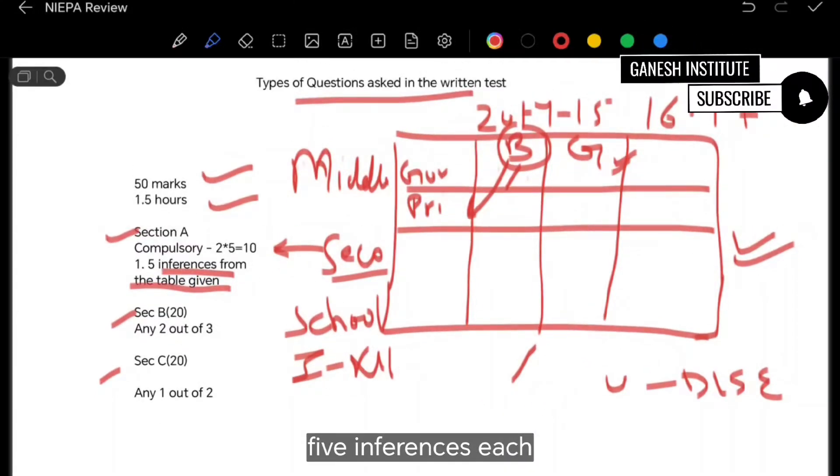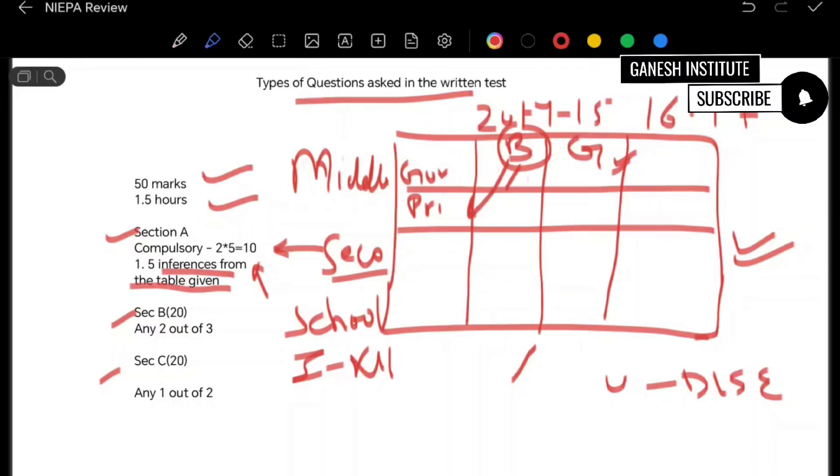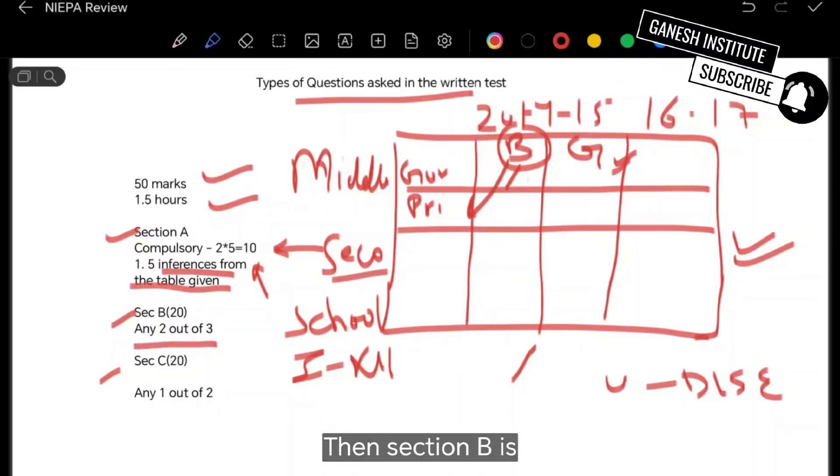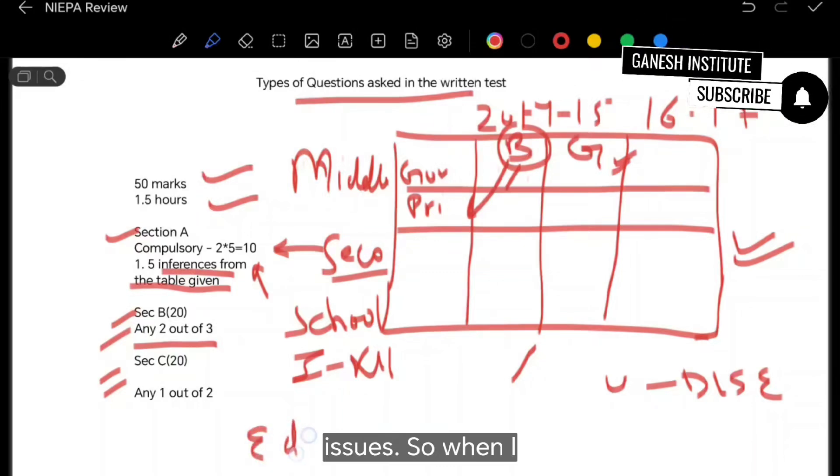Such sort of inferences you have to come up with. Five inferences, each and every inference of two marks. So 10 mark question is this. Then section B is, section B and C, both of them are based on educational issues.